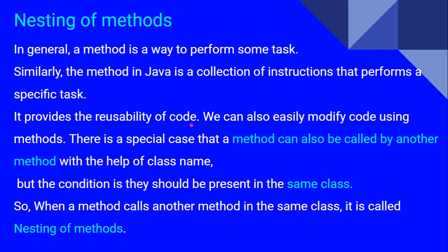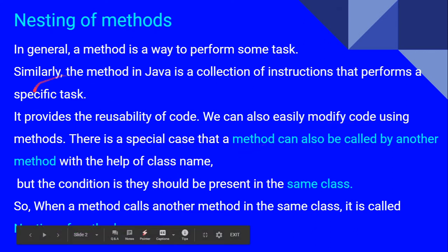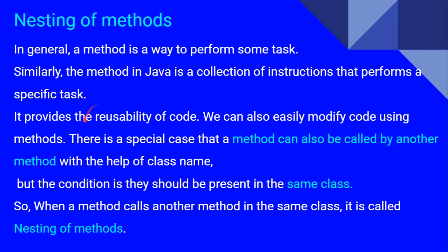Methods provide reusability of code and allow us to easily modify the code. There are two advantages of using methods: one is reusability — we can reuse the method again and again whenever needed in big programs. The other advantage is that we can easily modify the code. If any error is found, we can locate in which block or module the error has occurred, making it easy to fix.